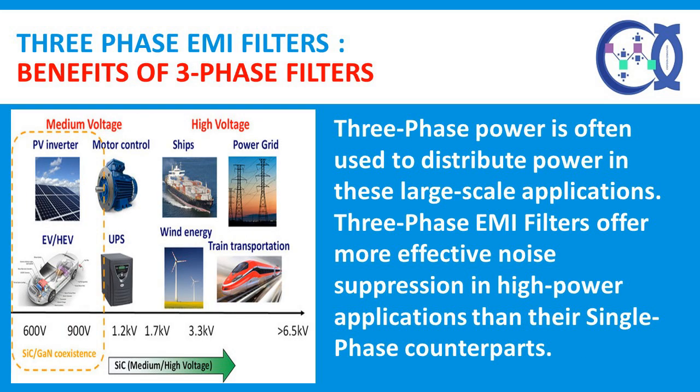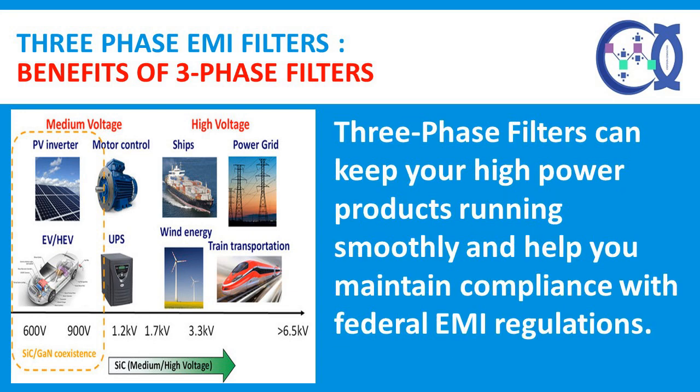Benefits of Three-Phase EMI Filters: Different types of electrical networks have various power demands. Smaller items, such as consumer electronics and home appliances like microwaves, have little power demand and only need single-phase power. But high-power applications, like industrial machinery and test equipment, require more power to function. Three-phase power is often used to distribute power in these large-scale applications. Three-phase EMI filters offer more effective noise suppression in high-power applications than their single-phase counterparts. Because electrical noise can impede the functionality of many electronic and electrical devices, three-phase filters can keep your high-power products running smoothly and help you maintain compliance with federal EMI regulations.